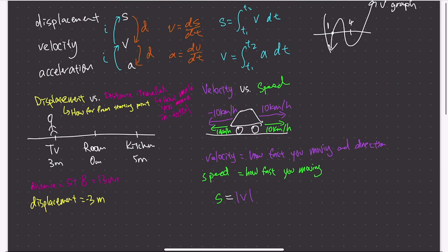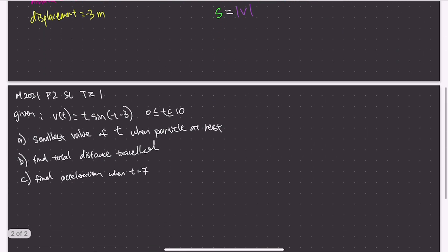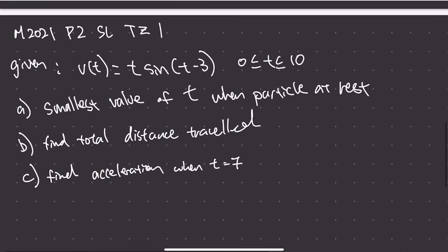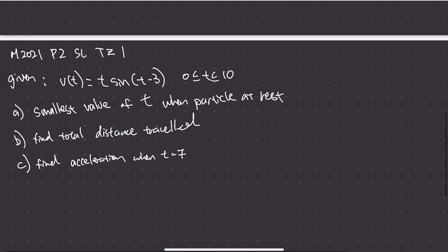Now let's try a concrete IB example from May 2021, Paper 2 of the AASL exam, Time Zone 1. The question gives you the velocity function V(t) = t·sin(t − 3). If we graph it, it looks like a wave oscillating with the x-axis spanning to 10.